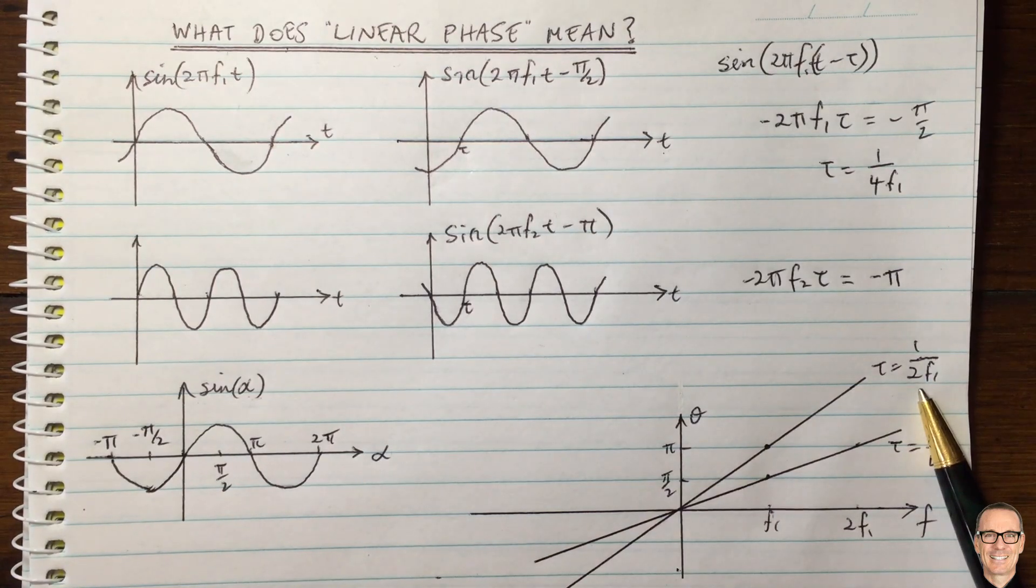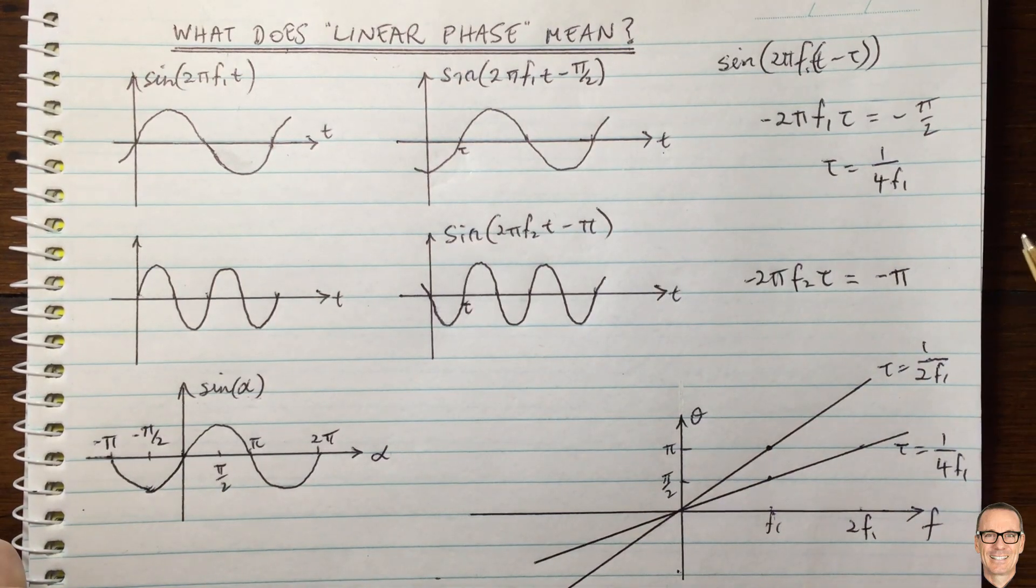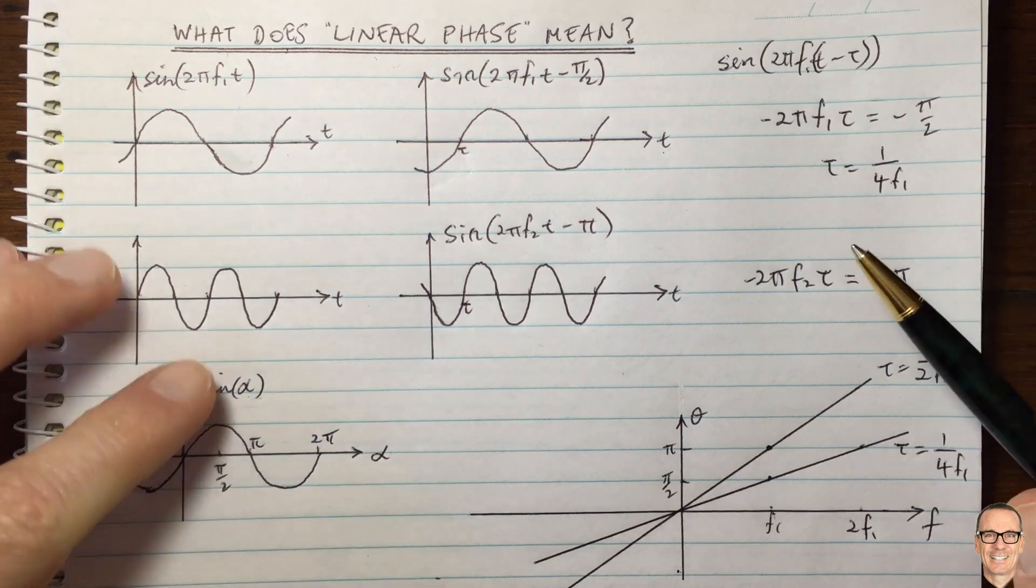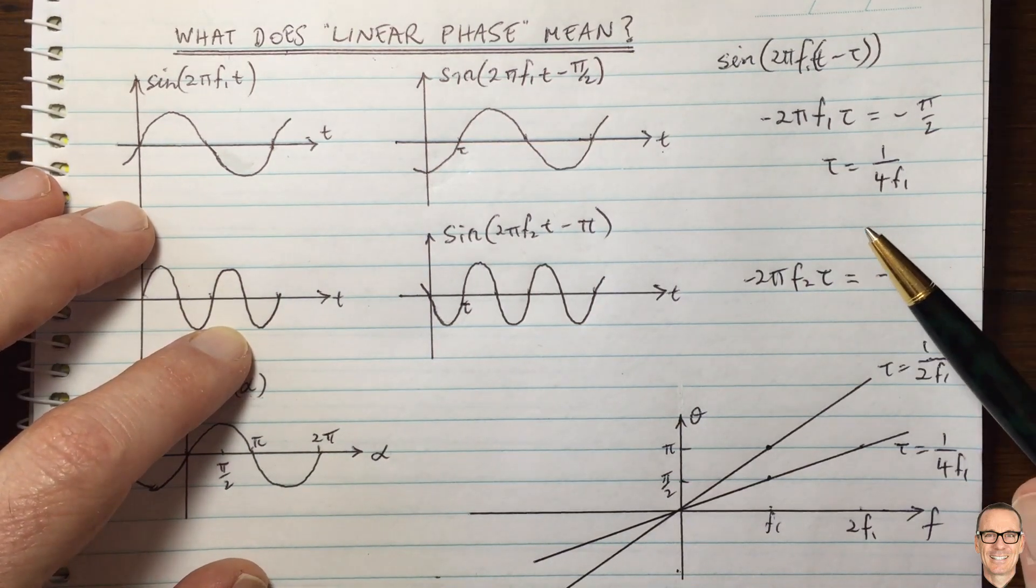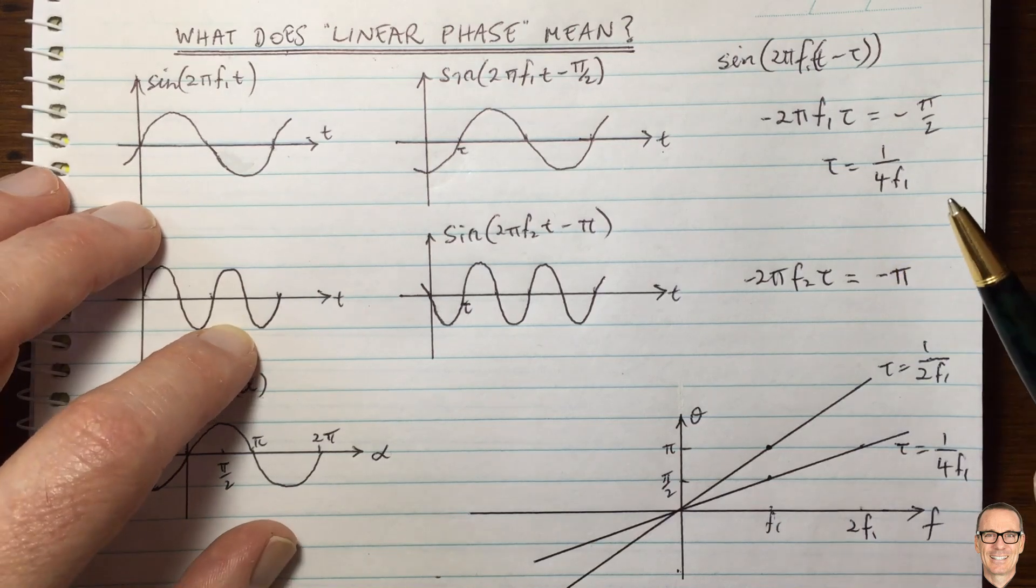And so you might ask yourself, well, when do you not have linear phase? Well, that's when different frequencies are delayed by different amounts. And some examples of those include optical fibers and infinite impulse response filters.